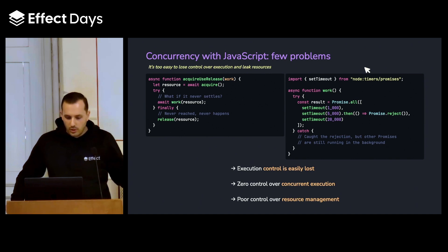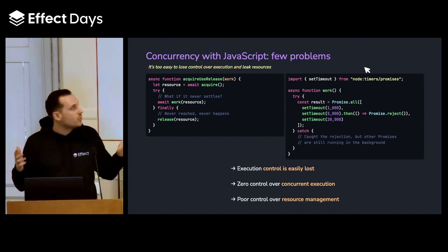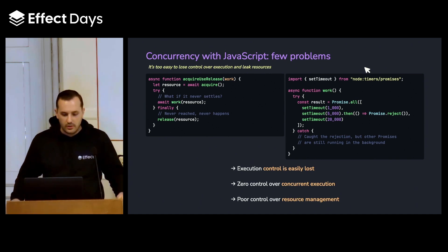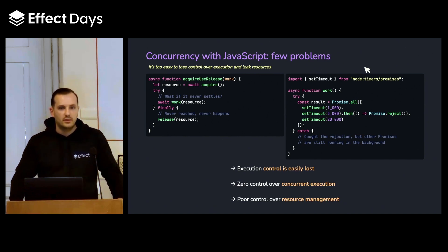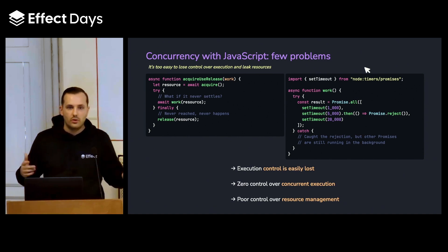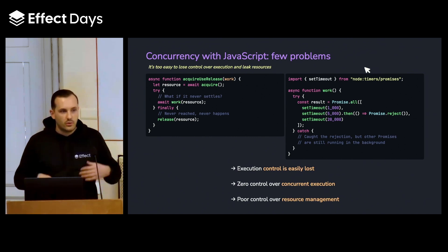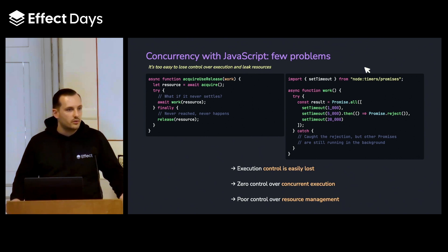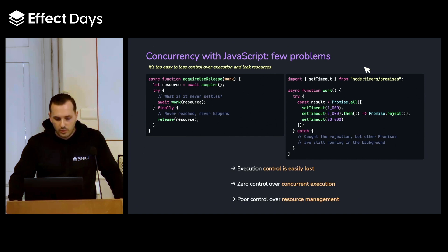The issue is that you might end up leaking resources or deadlocking them, as you never reach the final block for these promises. The other issue I want to go through is with the famous promise.all. It doesn't offer us a good way to have control over the concurrent execution — it's unbounded by default, so everything gets fired concurrently, and you might have issues with that.